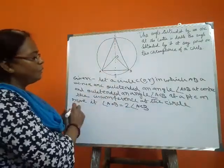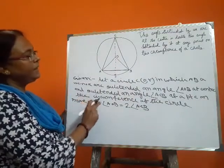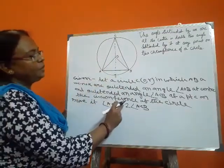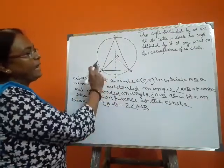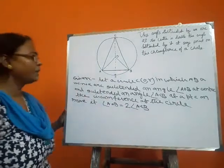To prove: angle AOB is equal to 2 times angle ACB.